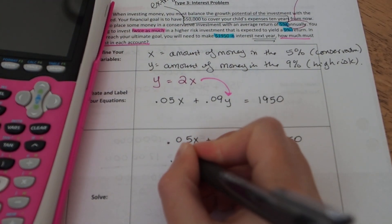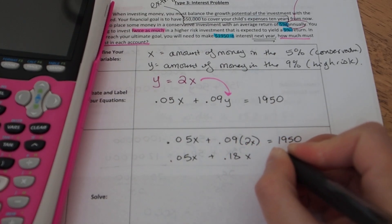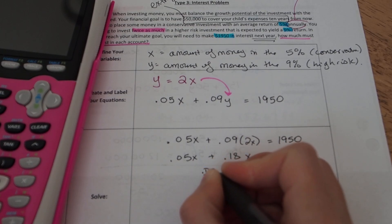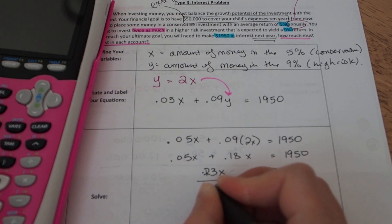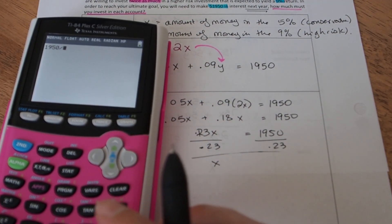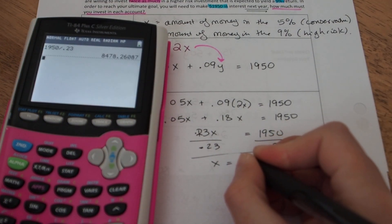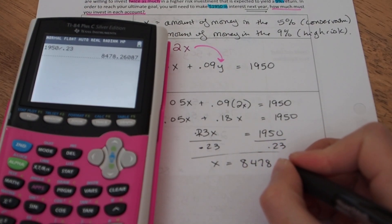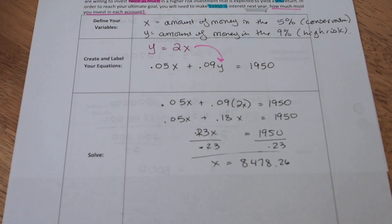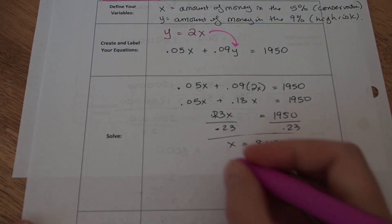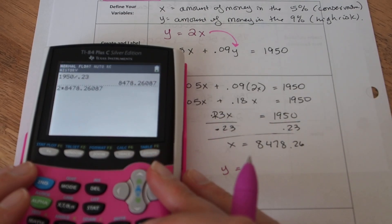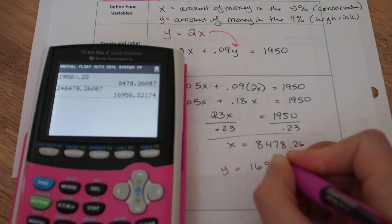That should equal the total amount of interest at $1,950. Now this equation is set up to use substitution because you've already got y solved for. So we're going to use substitution to solve this one. So 0.05x plus 0.09 times 2x equals 1950. That gives me 0.05x plus 0.18x equals 1950. If you add those up, that should give you 0.23x equals 1950. And then you can divide both sides by 0.23. So I need to do 1,950 divided by 0.23, so about $8,478.26.